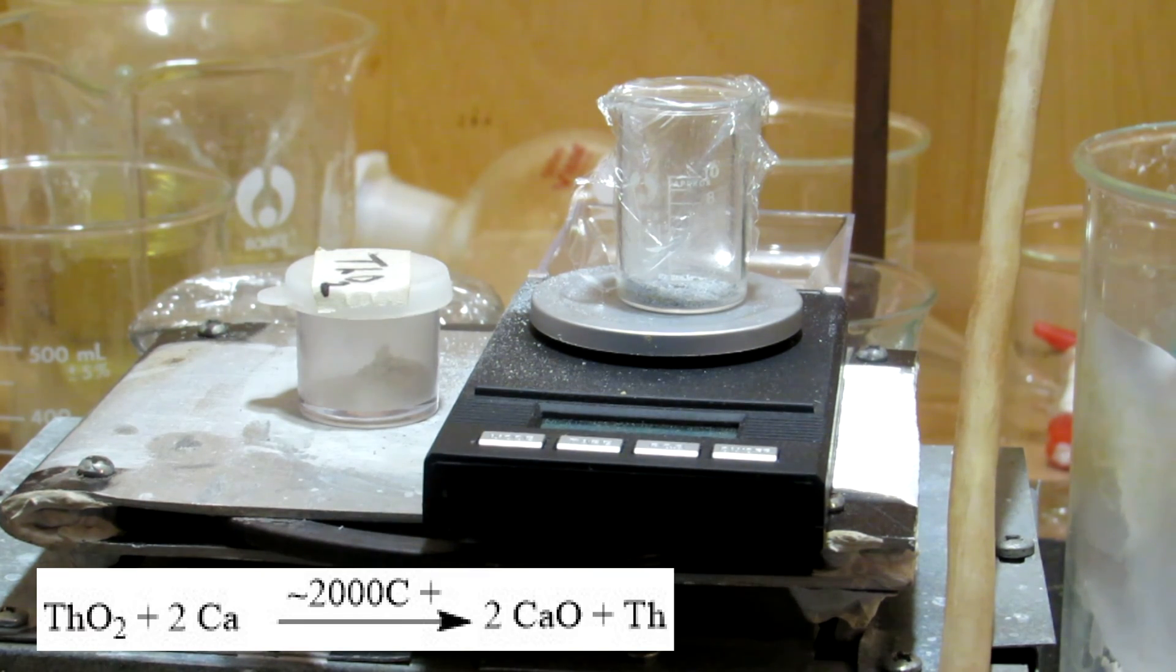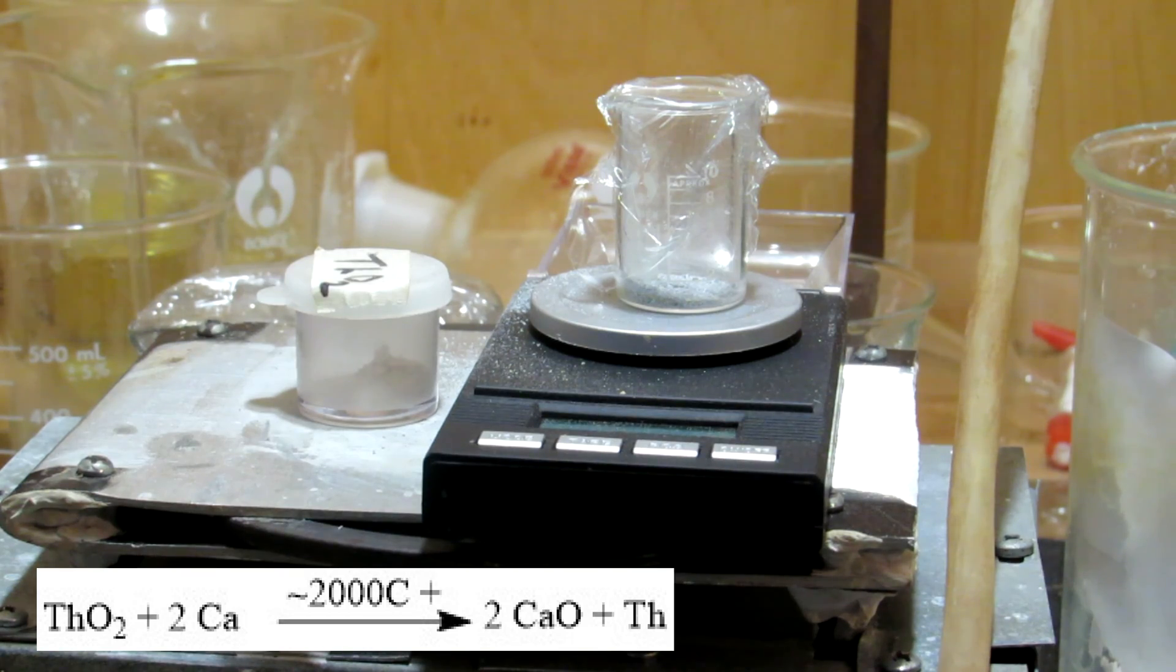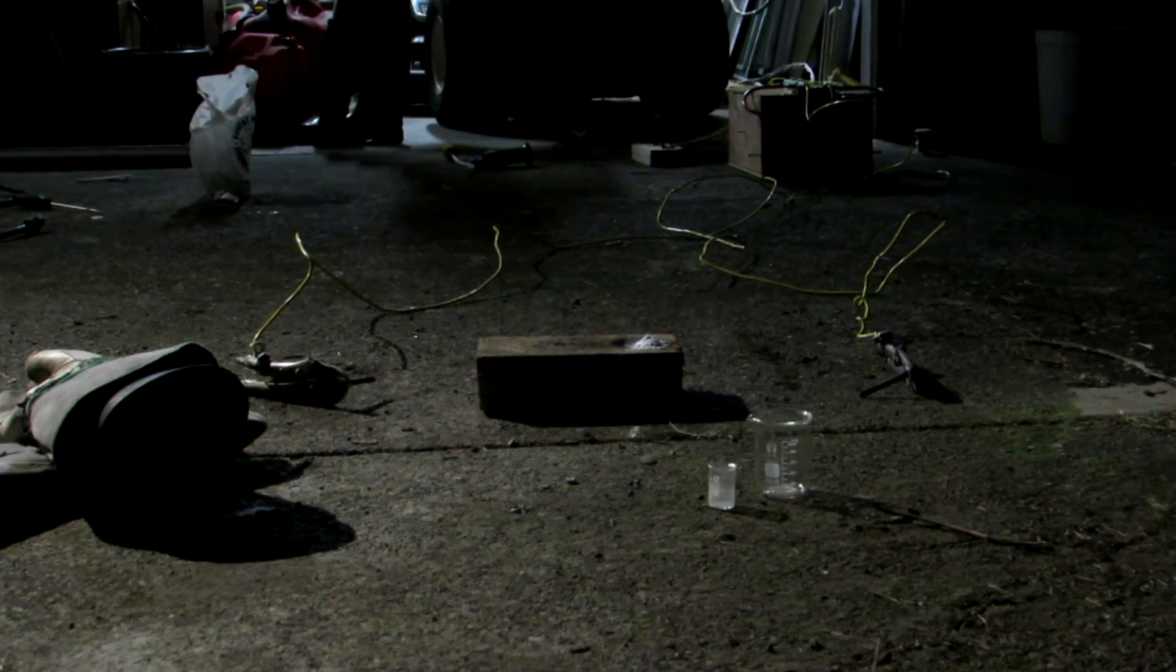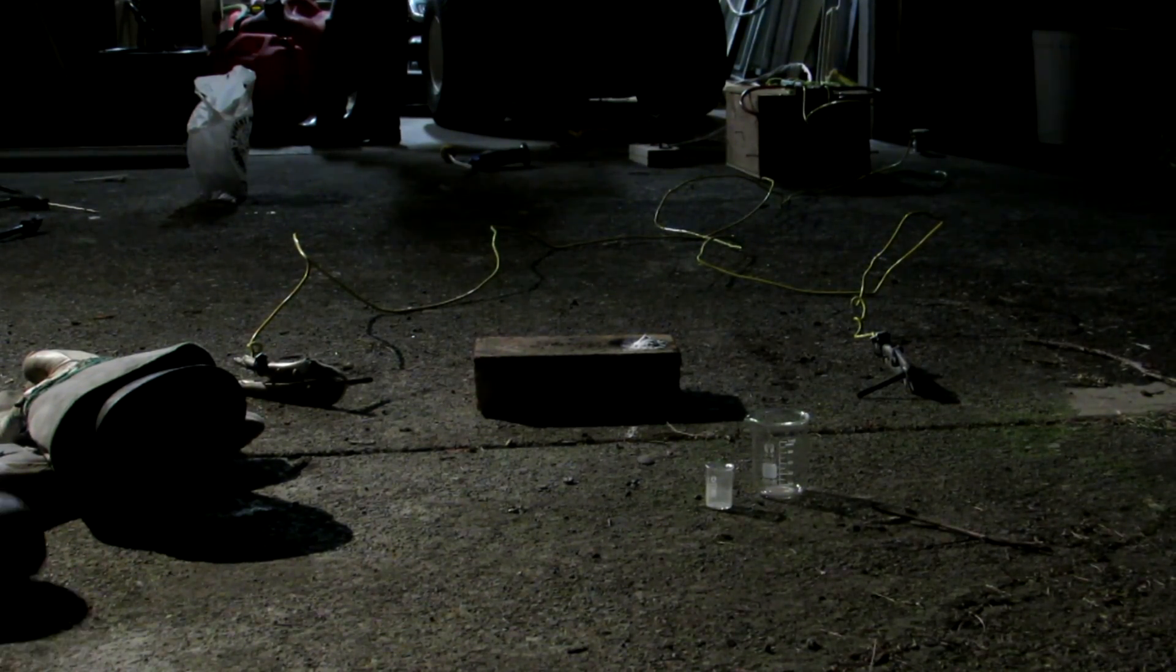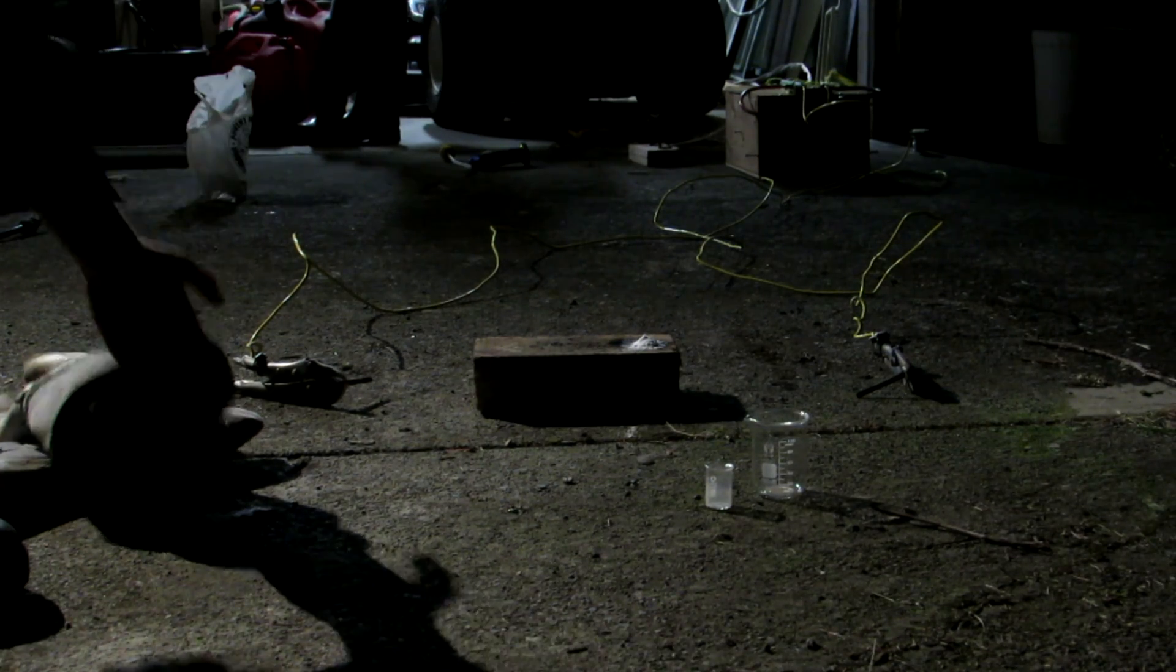To convert the thorium dioxide to thorium metal, we can reduce it with an excess of calcium metal at high temperatures in my homemade arc furnace. The arc furnace was made by rewinding the coils on an old 45-pound iron core transformer that I found behind a dumpster.